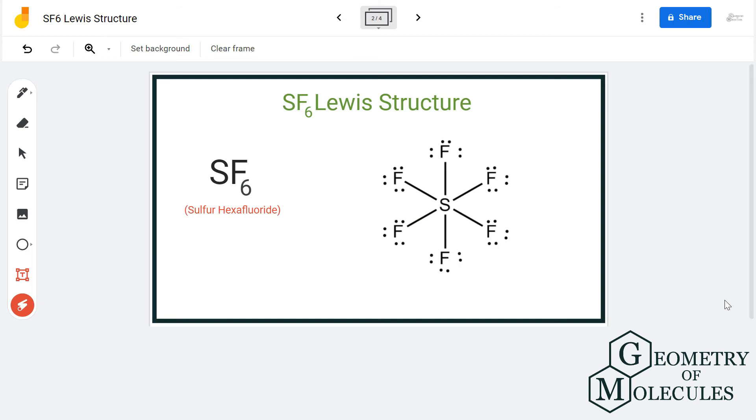Sulfur is on period three of the periodic table and it can expand its octet to accommodate more than eight valence electrons in its outer shell. Here it is sharing six of its electrons with the fluorine atoms, that means it has 12 valence electrons in its outer shell. But that is possible because it is an exception to the octet rule.